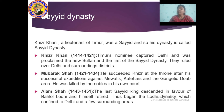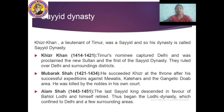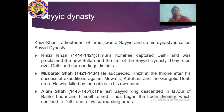Then came Mubarak Shah, who ruled from 1421 to 1434. He succeeded Khizr Khan at the throne after successful expeditions against the Mewatis, Katihar, and the Doab region. However, he was killed by the nobles in his own court — his own subordinate people killed him because they did not approve of his administration.